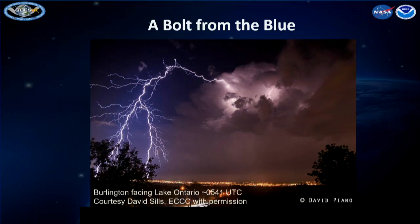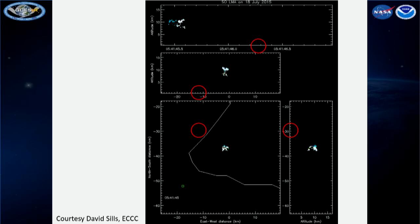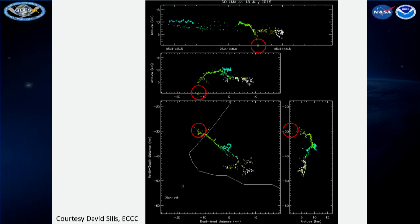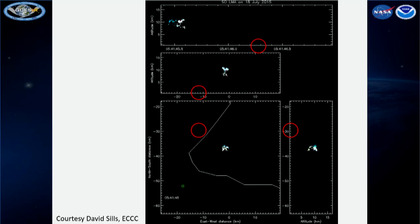Here's a bolt from the blue over Lake Ontario — lightning coming out the side of the cloud and going to ground. The VHF lightning mapping system that Environment Canada has in Toronto provides data to the Buffalo, New York Forecast Office. The storm is out over the lake and the lightning propagates 14 kilometers, hitting ground near Toronto Airport. The 3D structure of that lightning channel is projected into height versus time, height versus east-west distance, and height versus north-south distance panels.